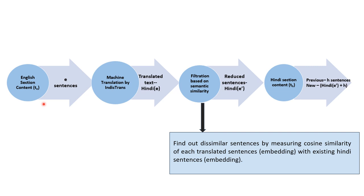We took the content of section TE, which consists of E sentences, and translated them into Hindi sentences using the machine translation model IndicTrans. This model is specifically trained on Hindi languages. But we did not add all the translated content to the Hindi sections. Before that, we filtered out similar sentences, and only the semantically dissimilar sentences are added to enrich the particular Hindi section.